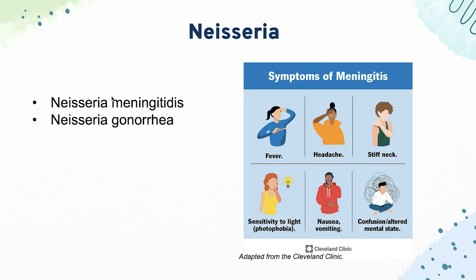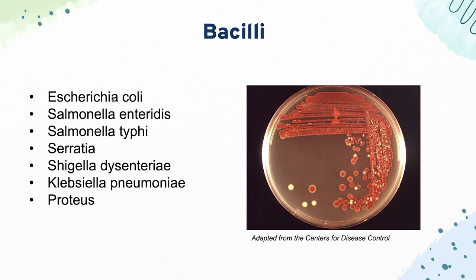Up next, we have the gram-negative bacilli. This starts with E. coli, which is known for causing food poisoning. It can also cause hemolytic uremic syndrome if it is the specific serotype called EHEC — that's very high yield for the exam.